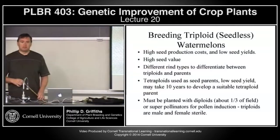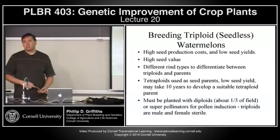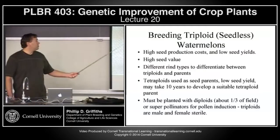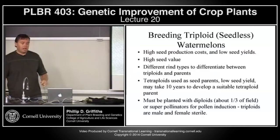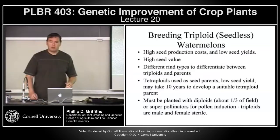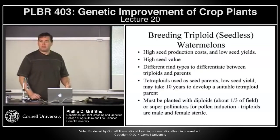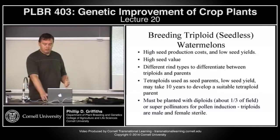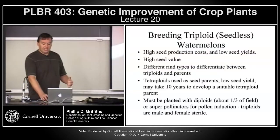These improvements can be combined with other traits such as flesh color — producing yellow-fleshed watermelon, or even purple and orange-fleshed watermelon. This is also illustrated by the smaller personal-sized seedless watermelons now seen in stores.